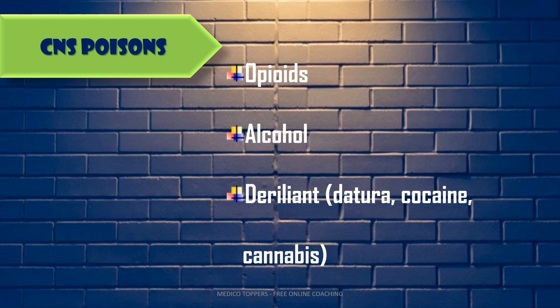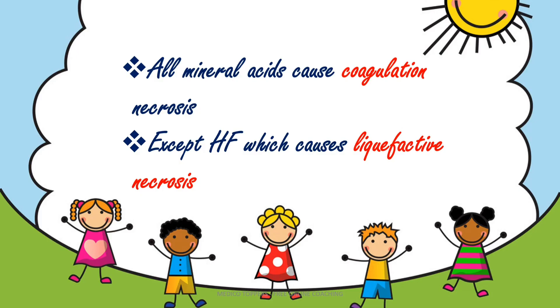Remember: 'Coke can' is the mnemonic for delirants — D for datura, coke for cocaine, and can for cannabis. But here, 'coke' meant conium and curare for peripheral poisons, whereas 'coke can' is for delirants. This is also a high-yielding MCQ note.